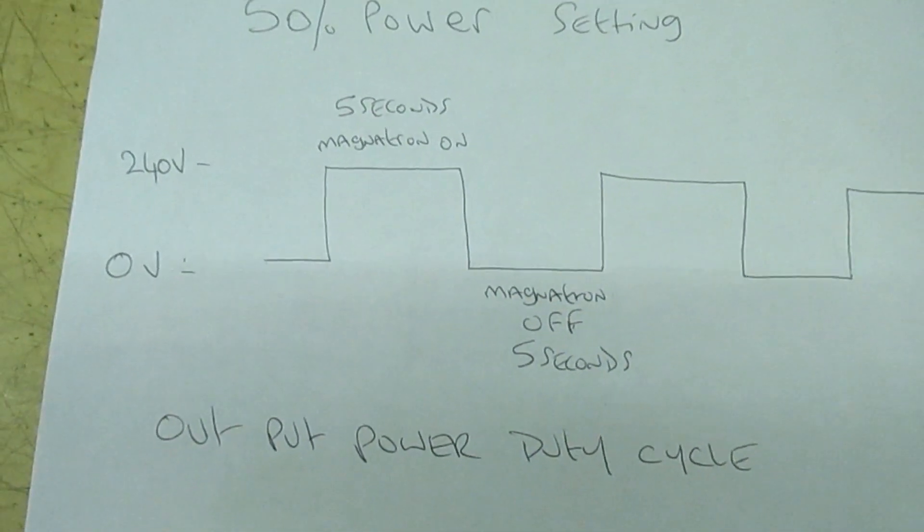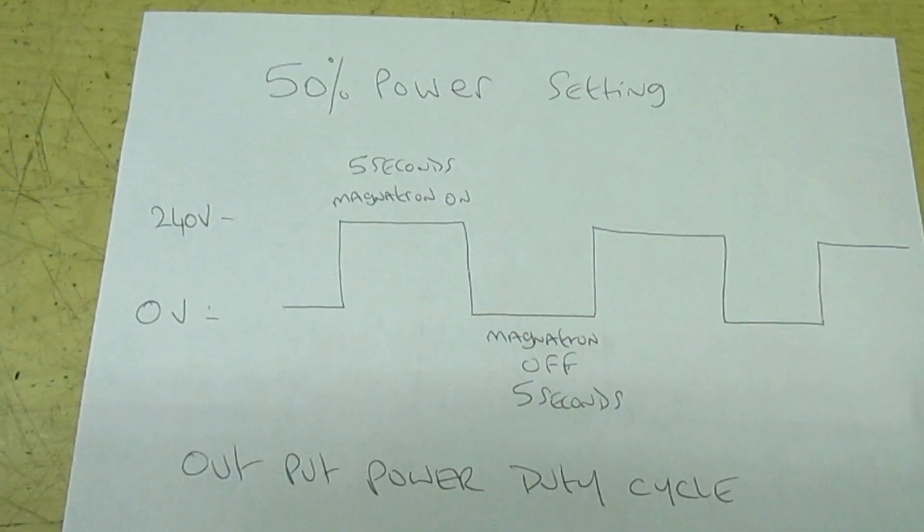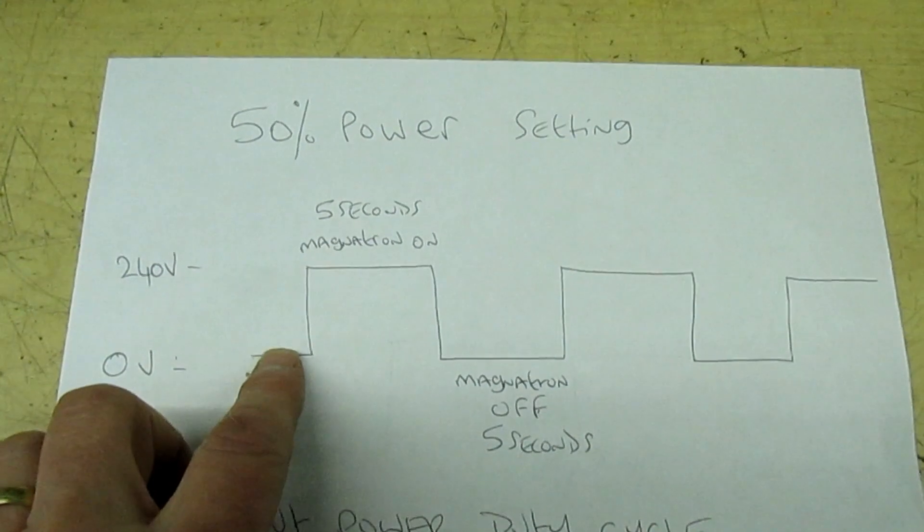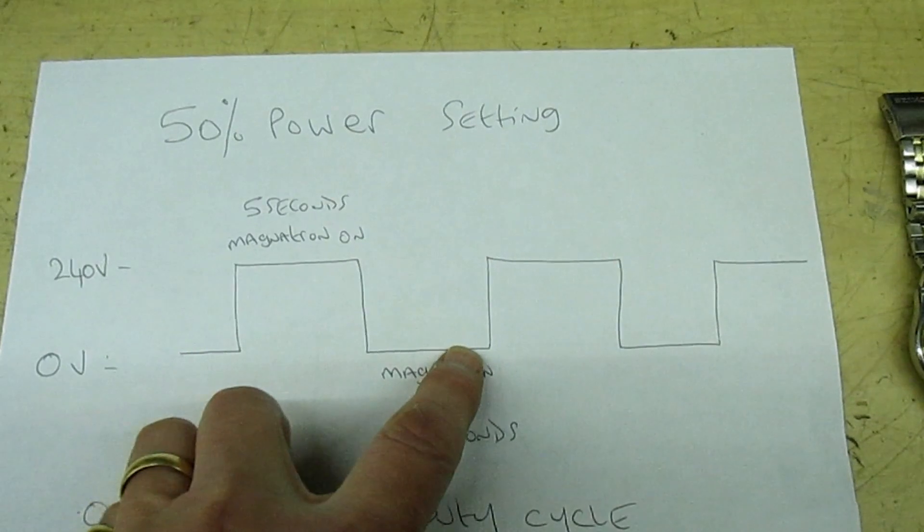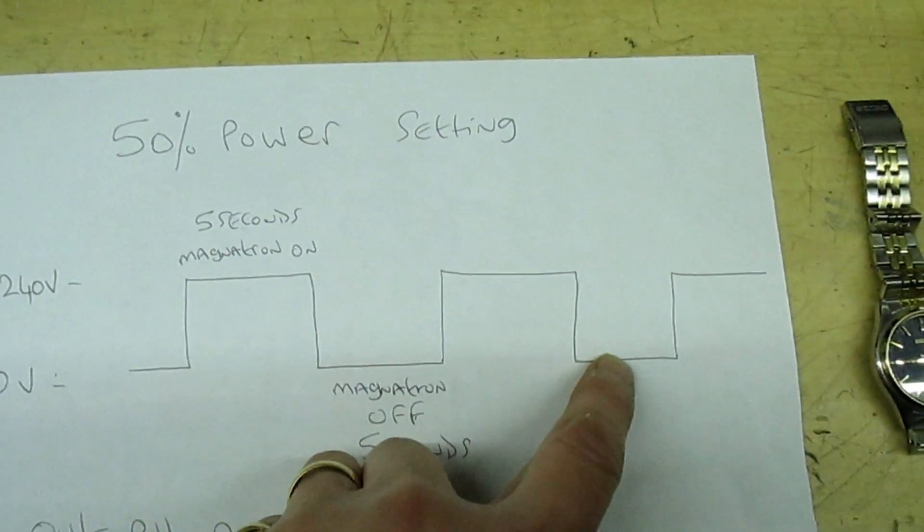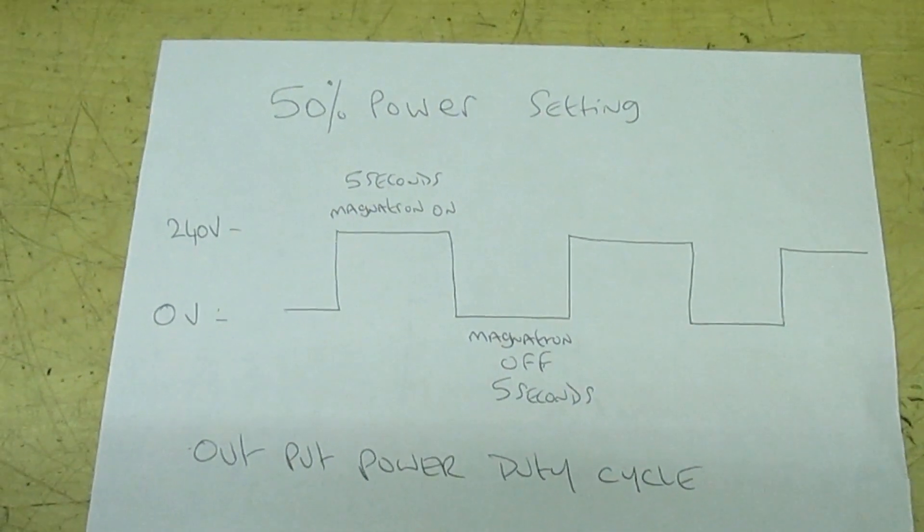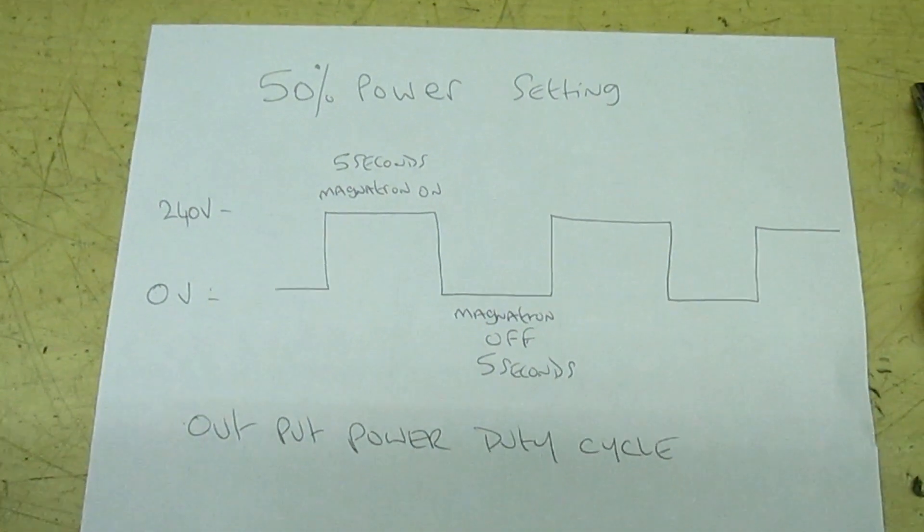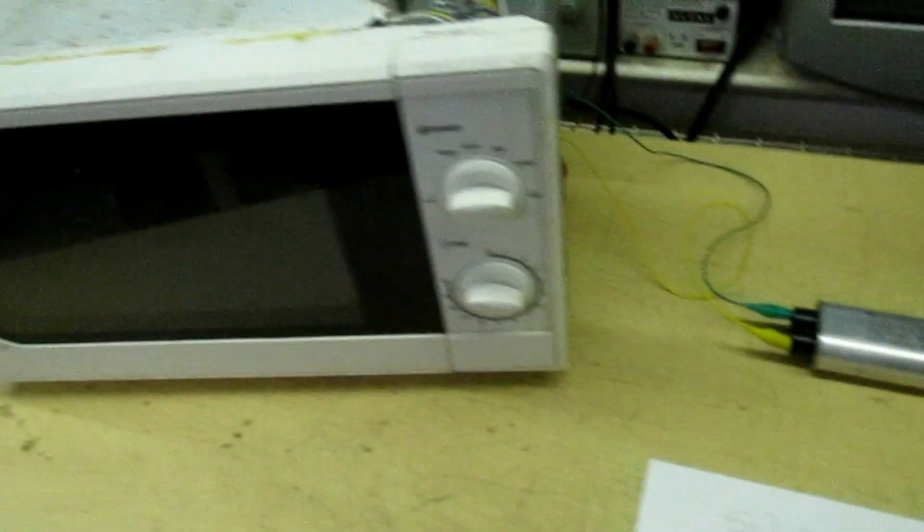So if we look at this little graph I've drawn, at 50% power setting, the magnetron for five seconds will supply full power, and then for the next five seconds the magnetron is switched off. Then the next five seconds it's switched on again and the next five seconds it's switched off. That's how they get 50% power. They don't actually lower the output from the magnetron. They run the magnetron at full power but for only half the time, and that gives you like a 50% reduction.